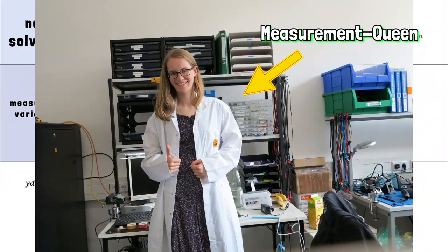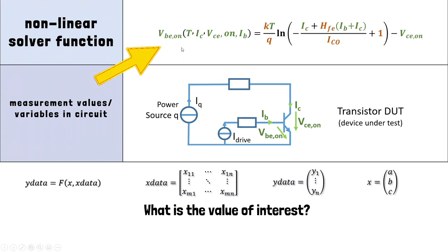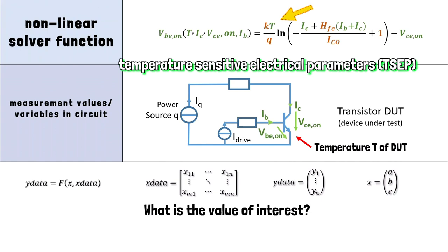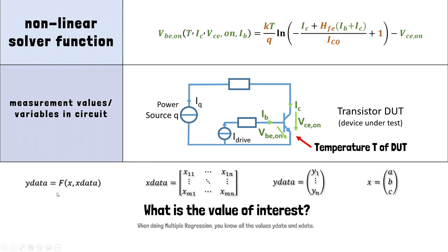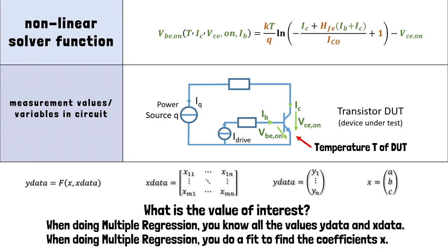Don't worry about the current value variables — when we are measuring current values, we are also just measuring reference voltage levels proportional to these current values, for example via measurement shunt. But at this point the great question is: what is the value of interest? What do we want to know? As the formula is arranged right now, you might think we want to calculate VBE_on. But there's one variable here that we cannot measure very easily in the dreary reality — the transistor temperature T. So our supreme goal is to find temperature-sensitive electrical parameters so that we can calculate the temperature later on.